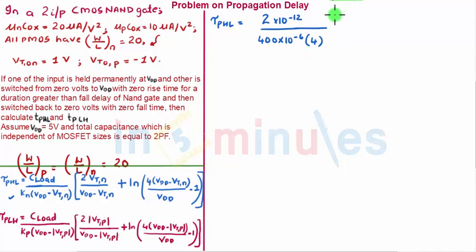So 5 minus 1, that is nothing but 4. We have this, open the bracket: twice into V_TN which is again nothing but 1, so twice into 1 is nothing but 2. Upon V_DD minus V_TN, 5 minus 1, 4, plus ln of 4 times V_DD minus V_TN.